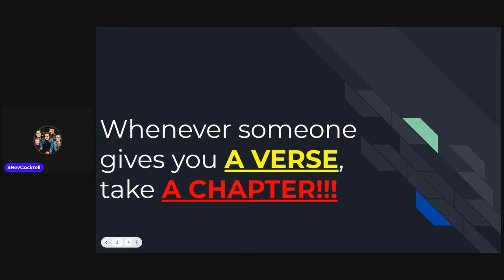Never allow someone to give you a single verse without doing the legwork of reading the context of that verse. Some say go by the 10-10 principle — read 10 verses up, 10 verses down. Sometimes verses taken out of context appear to mean something entirely different from what was intended. So what do you do? You put that verse back where it came from and then you see what it says. Whenever someone gives you a verse, you read the chapter. Get the context. This will help us from misinterpreting the Bible.